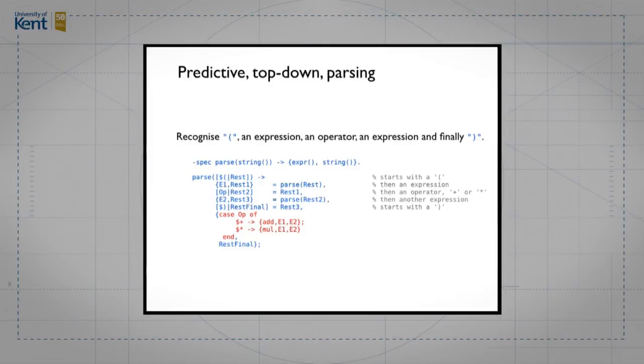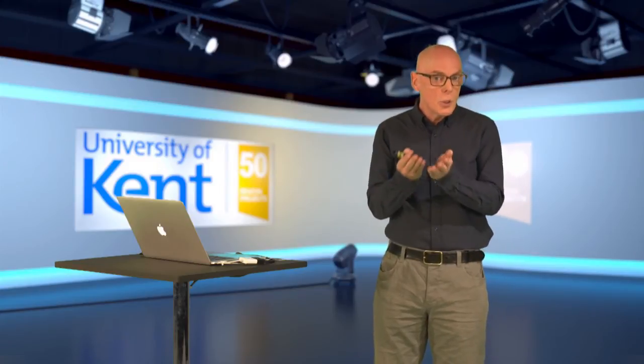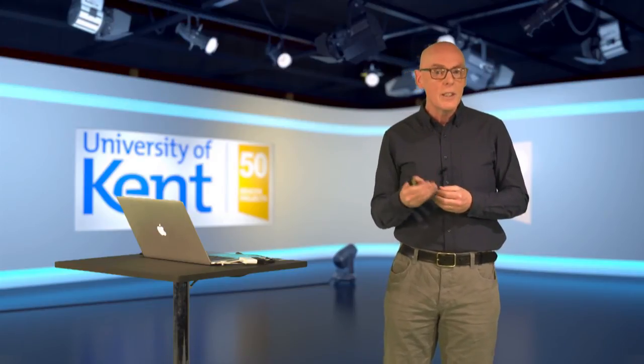You can see here we're threading through that remainder of the string. In another language, you might hide this behind a monadic interface — you've heard of monads in Haskell. But here we're directly manipulating that data, and once you've seen this it gives you an understanding of what's going on underneath a more abstract interface. What we're doing here is deterministic, top-down, predictive parsing by spotting the various patterns we expect to see in forming an expression.